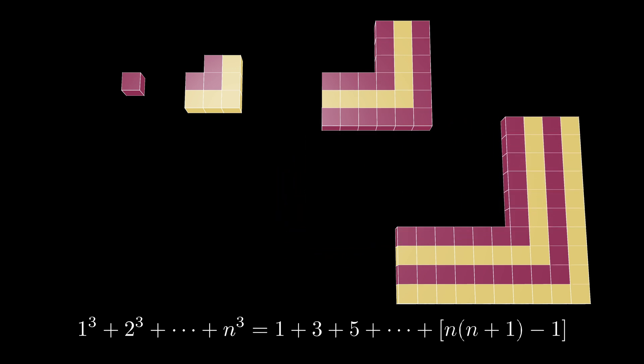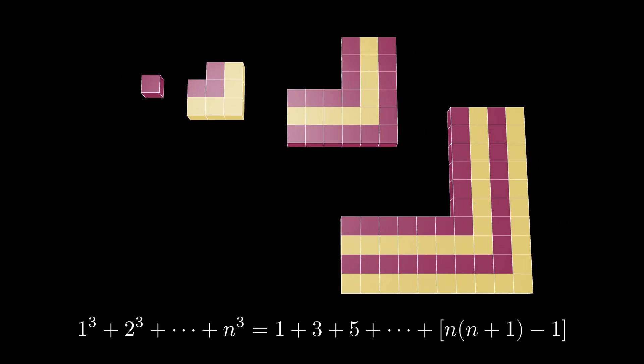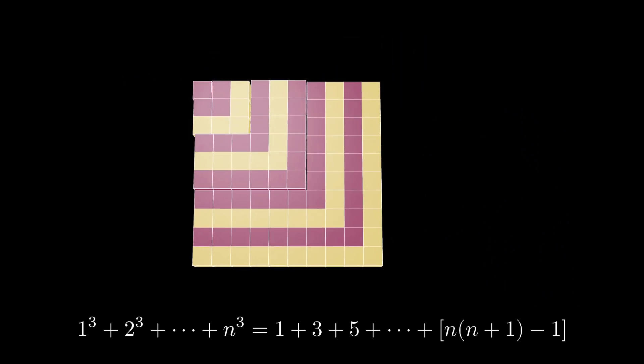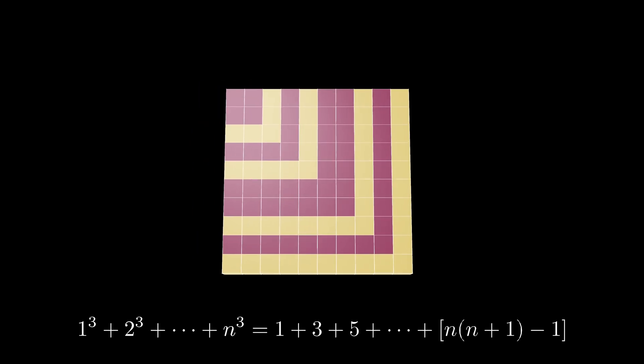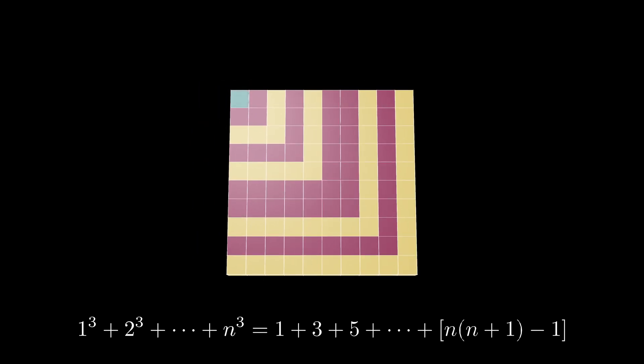By construction, these gnomons all fit together perfectly to form a square. Because of the rectangle dimensions, we see that this square has a side length given by 1 plus 2 up to n, or the sum of the first n positive integers.